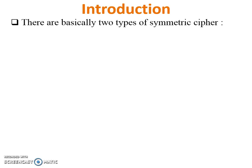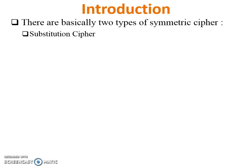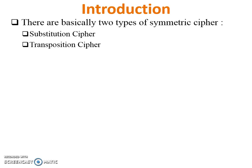Basically there are two types of Symmetric Cipher. First one is Substitution Cipher and second one is Transposition Cipher. Let's see the definition of both the ciphers.